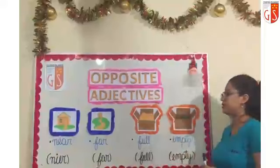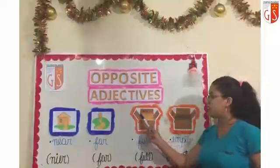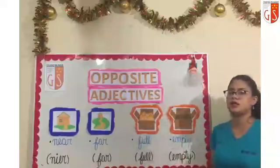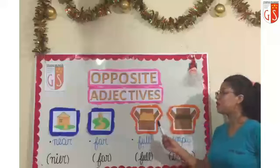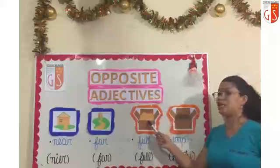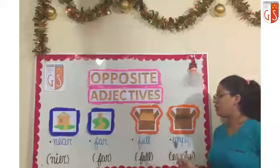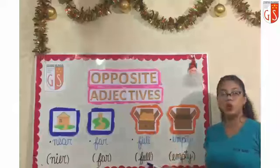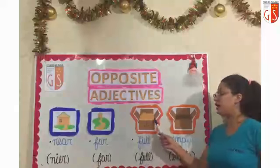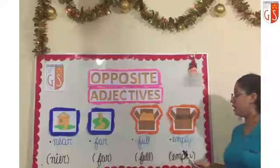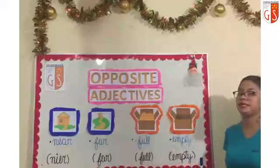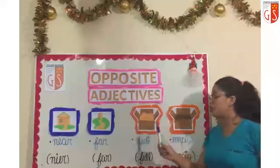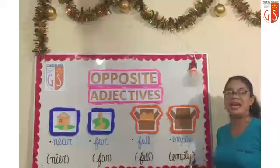Mis pequeños, ahora observemos estas cajas. What's the difference? Esta caja está llena, ¿verdad? Y esta caja está vacía. ¿Cuáles serían nuestros adjetivos opuestos? Serían lleno y vacío. Lleno en inglés se dice full. ¿Y vacío? Vacío en inglés es empty. One more time: lleno, full. Vacío, empty. Perfect.